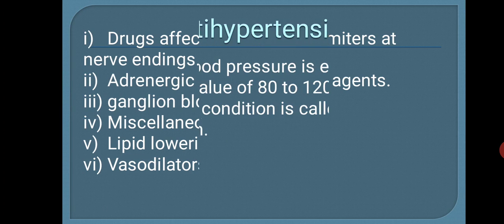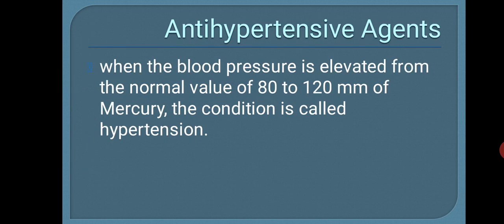First, we will see what antihypertensive agents are. When the blood pressure is elevated from the normal value — that is 80 to 120 mmHg — that condition is known as hypertension.